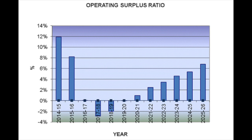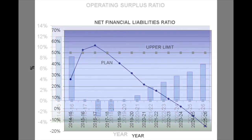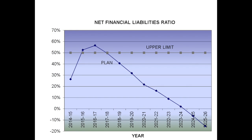This result is based on the assumptions previously mentioned and that service levels remain just as they are now, meaning no new services have been introduced. The other indicator we look at is the net financial liabilities ratio.